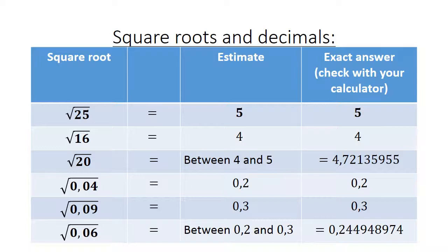Now look at the decimals. The square root of 0,04 equals 0,2 and the exact answer is 0,2. The square root of 0,09 equals 0,3 and the exact answer is 0,3. But now we have 0,06. It is between 0,04 and 0,09. So we estimate it is between 0,2 and 0,3. And when you work it out with your calculator, it is 0,24948974.